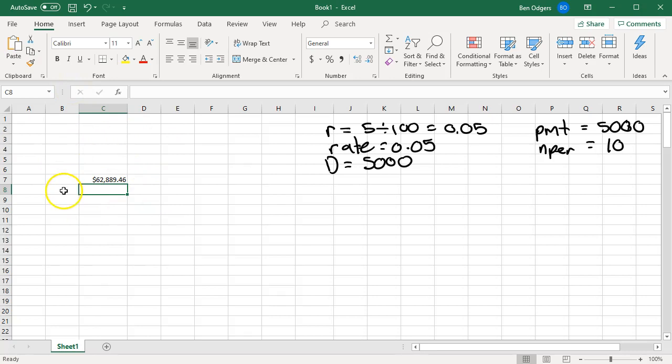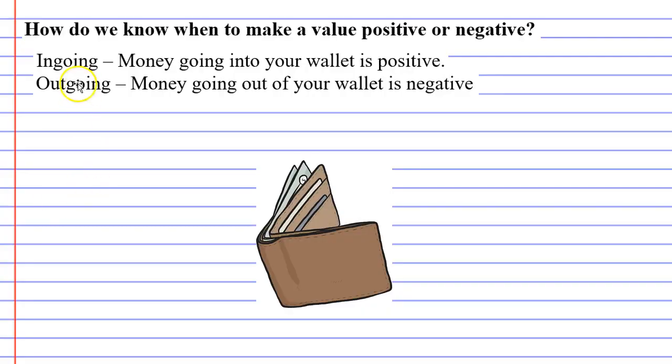So why did we need to make our repayment negative? It's all to do with what are known as in-goings and out-goings. Imagine you have a wallet. In-goings represent money that is going into your wallet. So in-goings are positive because when money goes into your wallet all of a sudden you have more money to spend. Out-goings represent money going out of your wallet. Out-goings are negative.